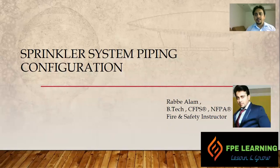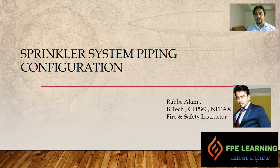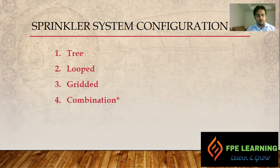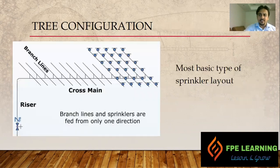Hello everyone, welcome to FPA Learning. Today I'm going to talk about sprinkler system piping configuration as per NFPA 13. We have three different configurations: tree, looped, and gridded. For most projects we have a combination of both, so we'll have a look at all of them one by one.